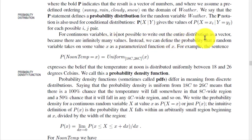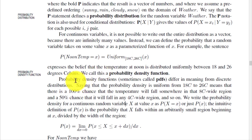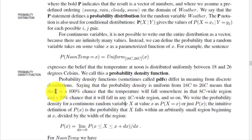For continuous variables it is not possible to write out the entire distribution as a vector because there are infinitely many values. Instead we define the probability that a random variable takes on some value x as a function of x — called the probability density function. For example, P(NoonTemp = x) = Uniform(18, 26), meaning there is a 100% chance the temperature falls somewhere in the 8-degree Celsius wide region, and a 50% chance it falls in any 4-degree Celsius wide region.